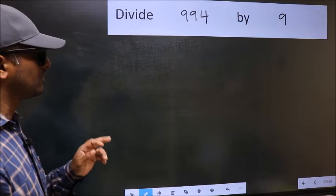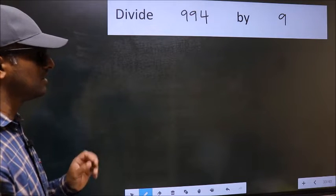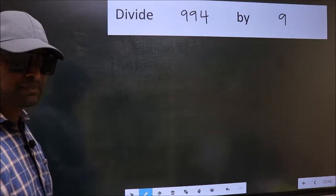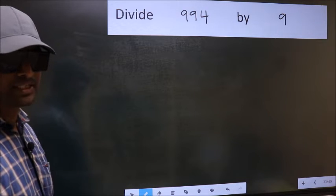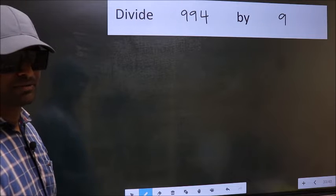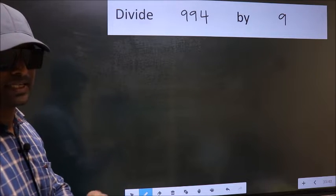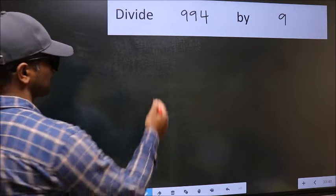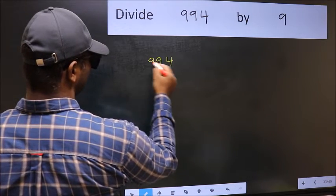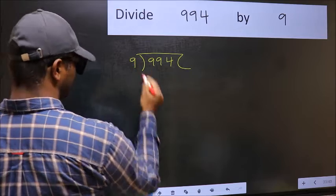Divide 994 by 9. While doing this division, many do this mistake. What is the mistake that they do? I will let you know. But before that, we should frame it in this way: 994 and 9 here.